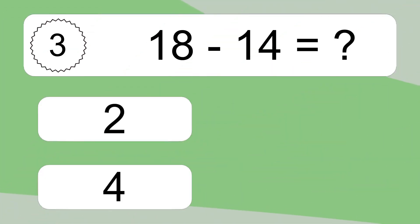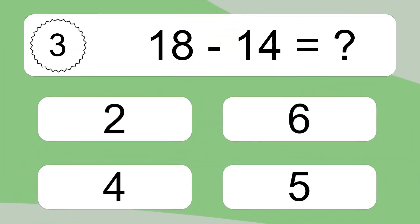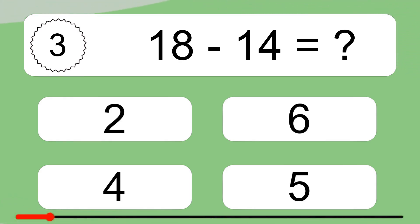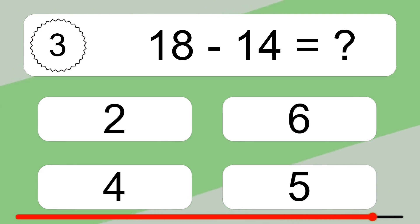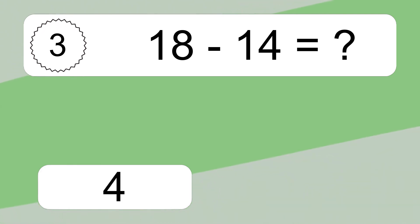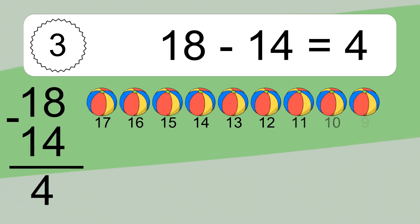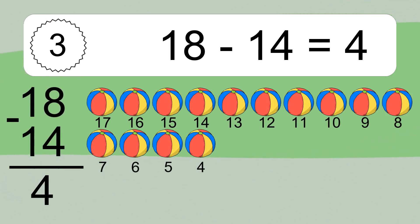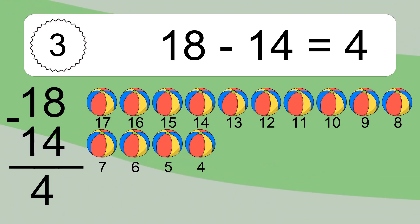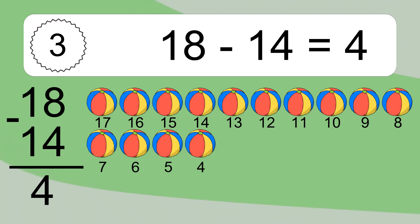18 minus 14 equals what? 18 minus 14 equals 4. Let's count it: 17, 16, 15, 14, 13, 12, 11, 10, 9, 8, 7, 6, 5, 4.